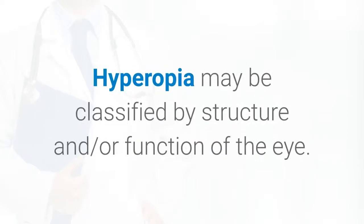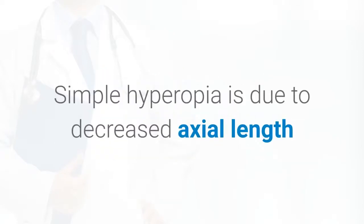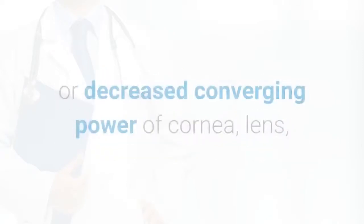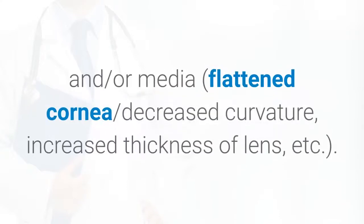Hyperopia may be classified by structure and or function of the eye. Simple hyperopia is due to decreased axial length or decreased converging power of cornea, lens, and or media, flattened cornea, decreased curvature, increased thickness of lens, etc.